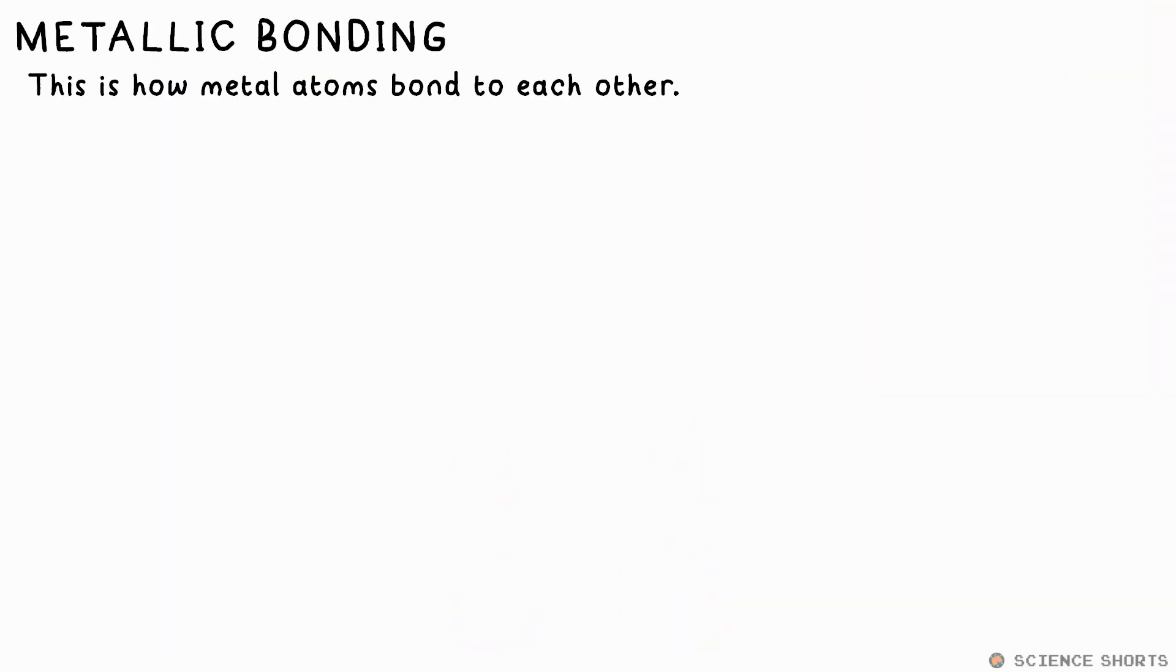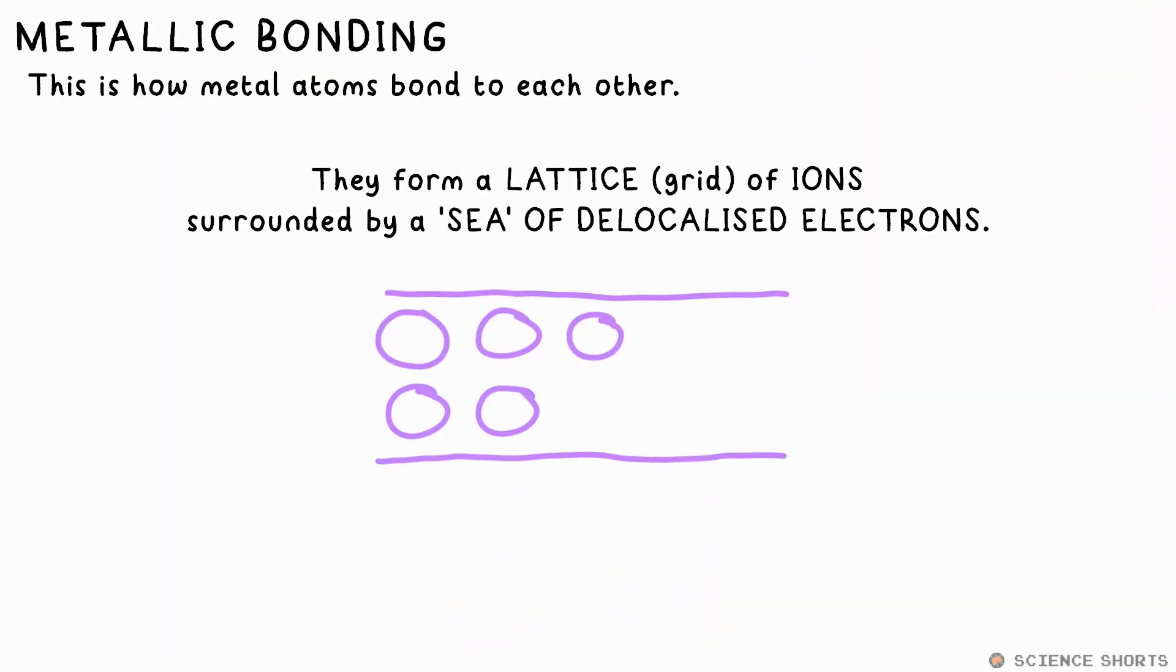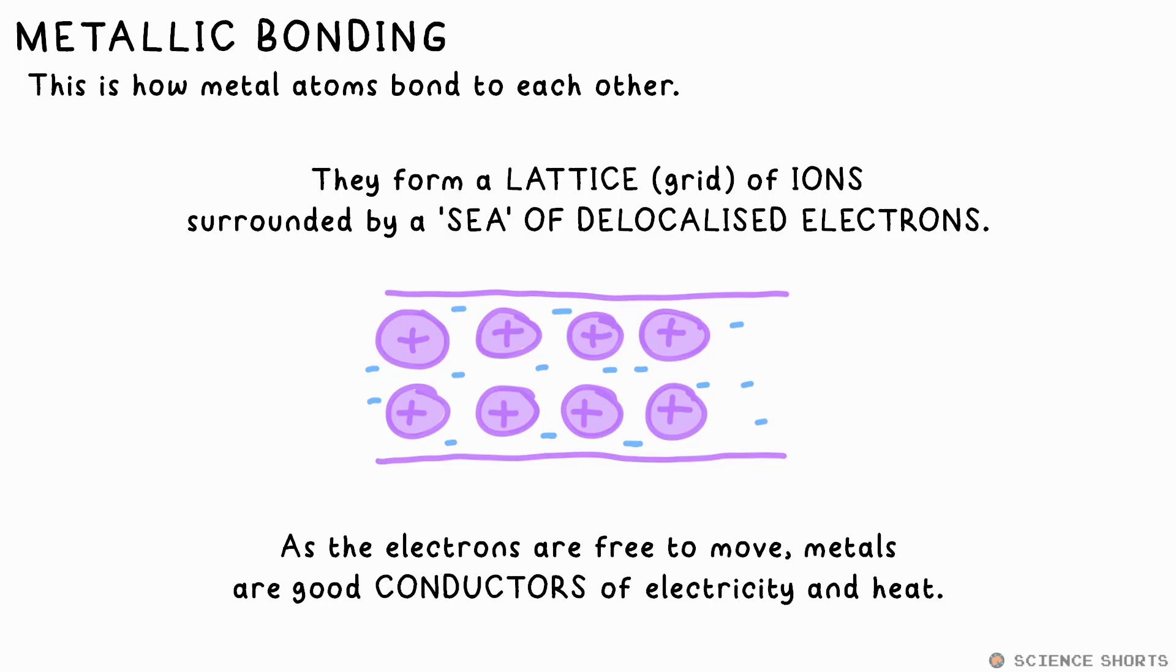Bonding next, metal atoms bond to each other through metallic bonding. Essentially, a lattice or grid of ions is formed with a sea of delocalised electrons around them. Delocalised just means they're not exactly on the atom anymore. As these electrons are free to move, metals make good conductors of electricity and heat.